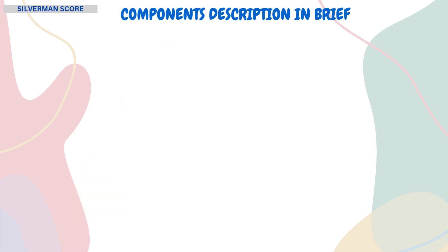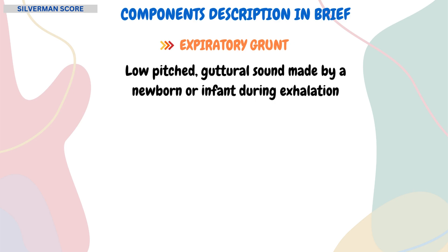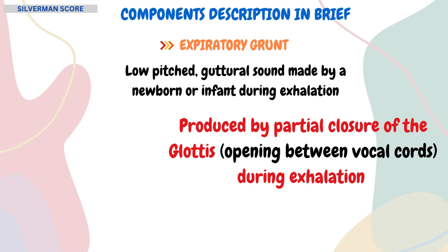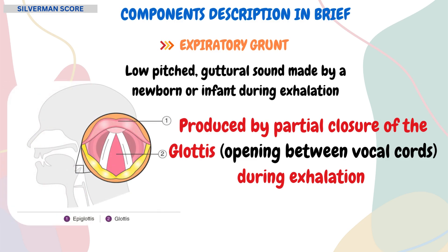The last component is the expiratory grunt. It refers to a low-pitched guttural sound made by a newborn or infant during exhalation. This sound is produced by the partial closure of the glottis — the opening between the vocal cords — during expiration, which increases the pressure in the lungs and helps to maintain lung volume.